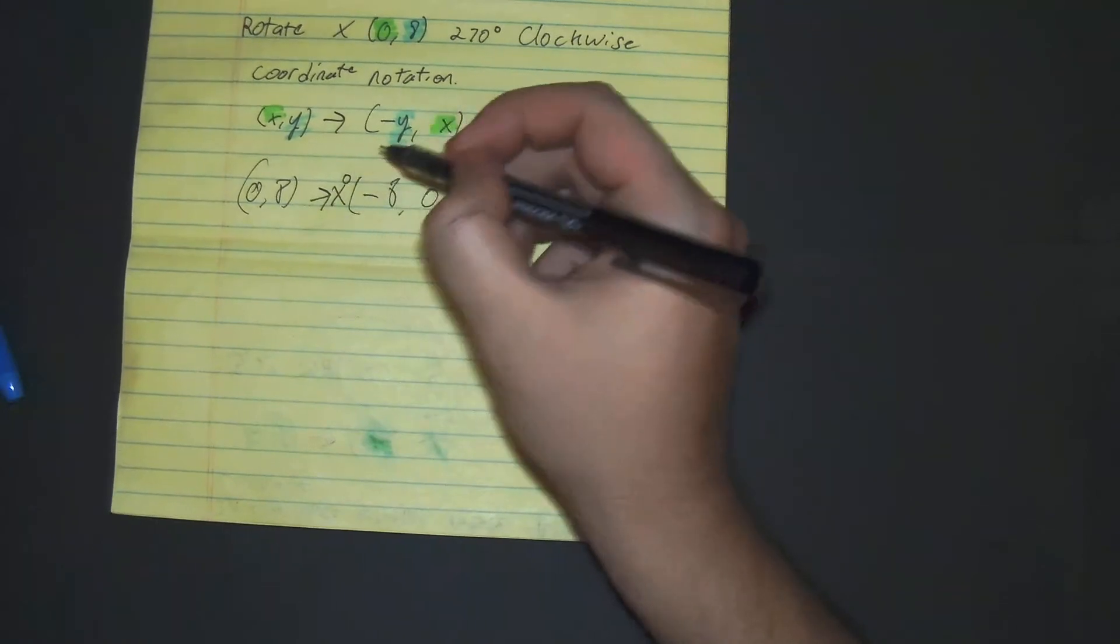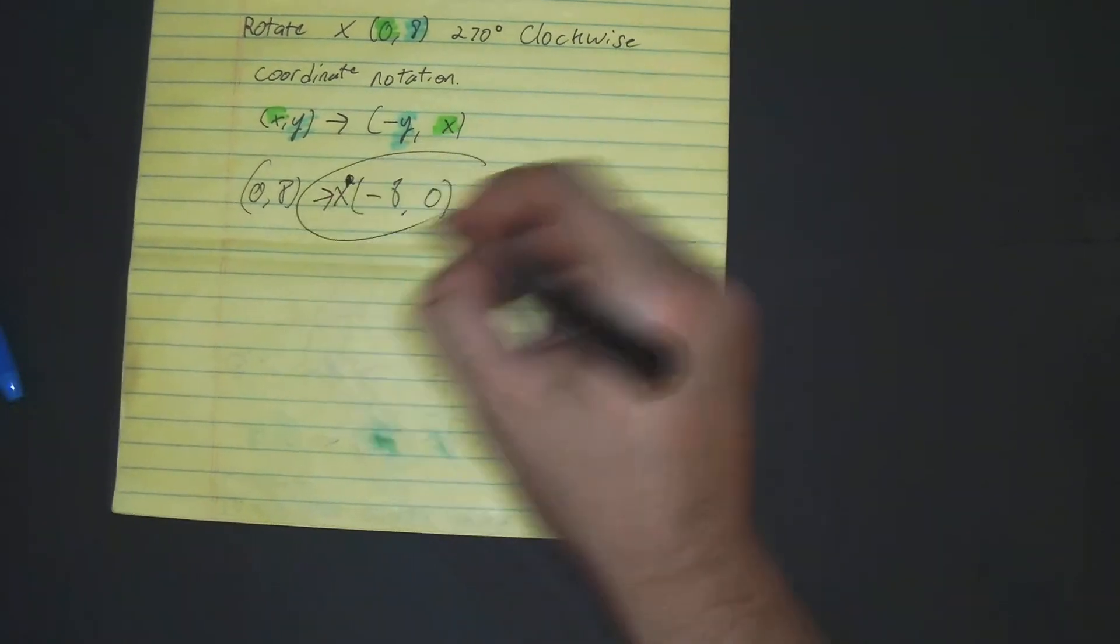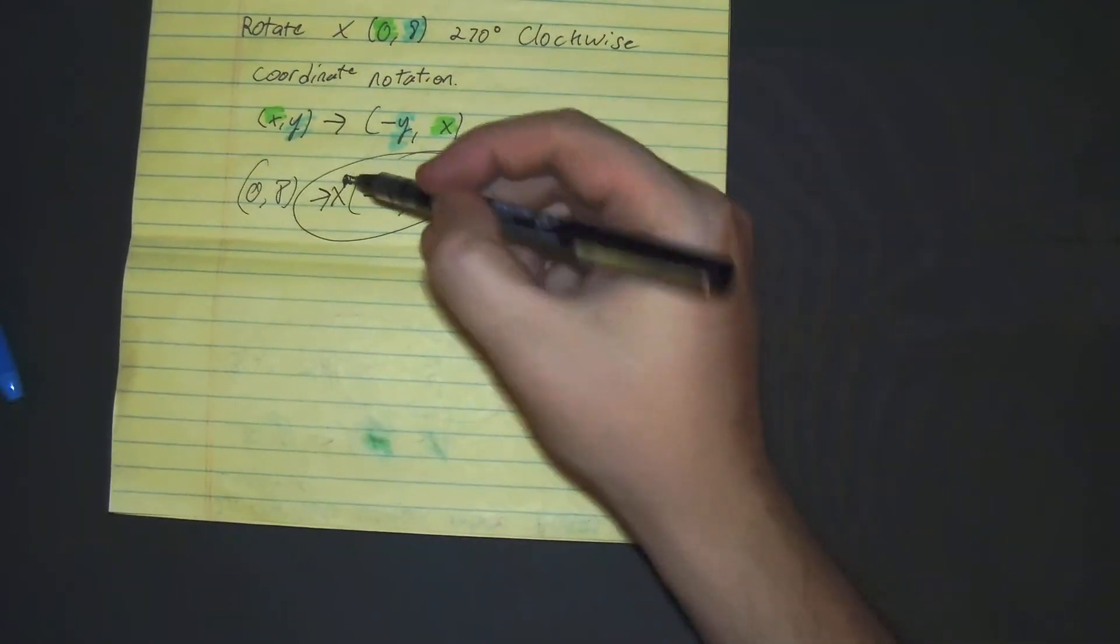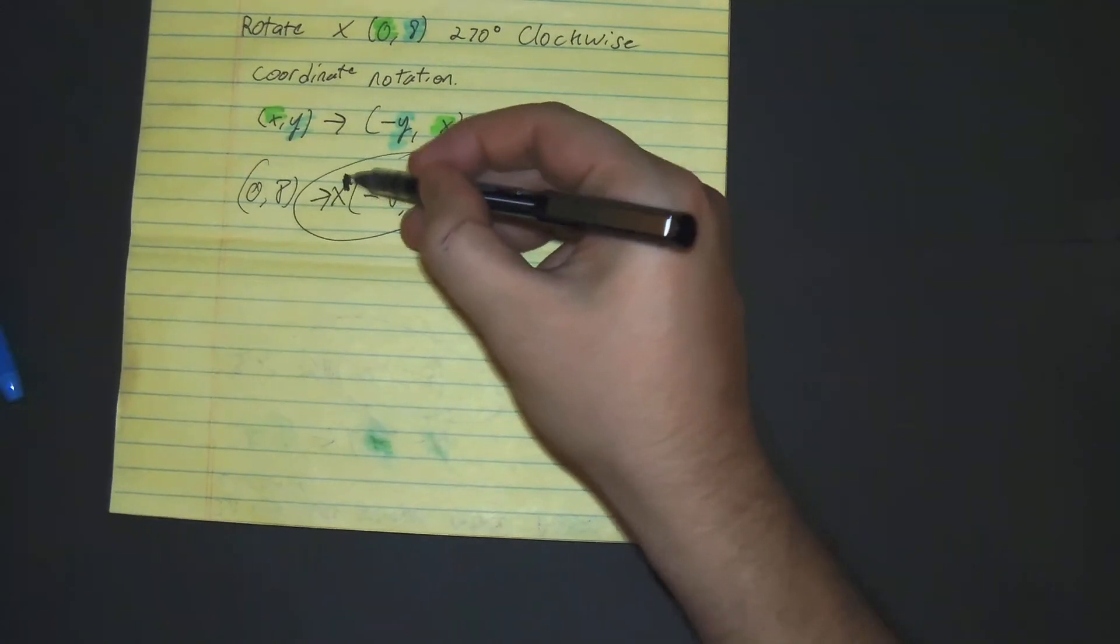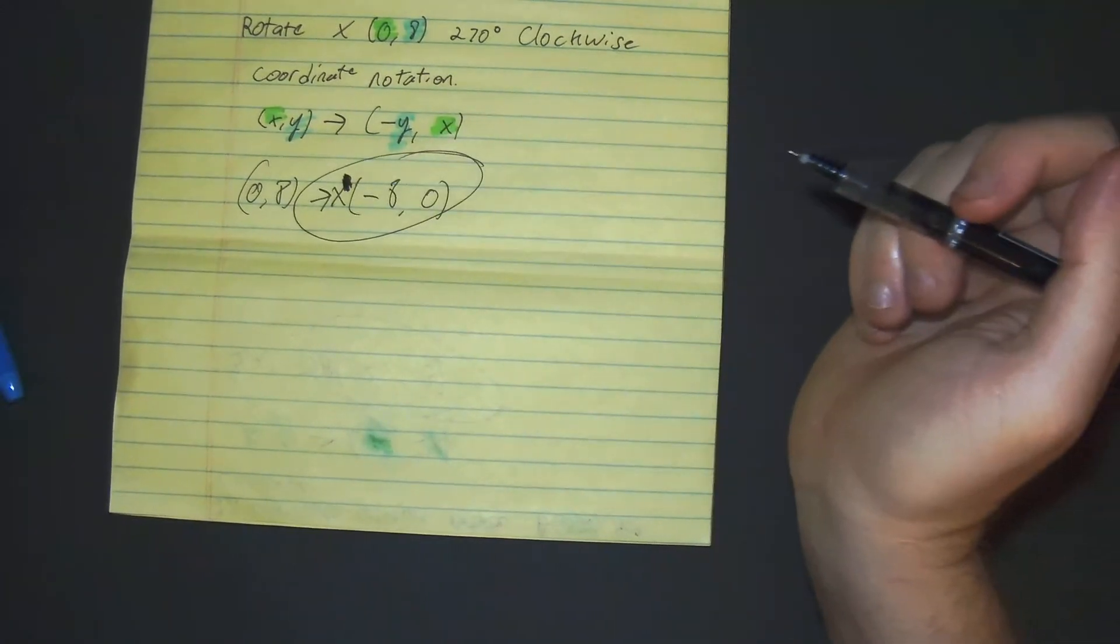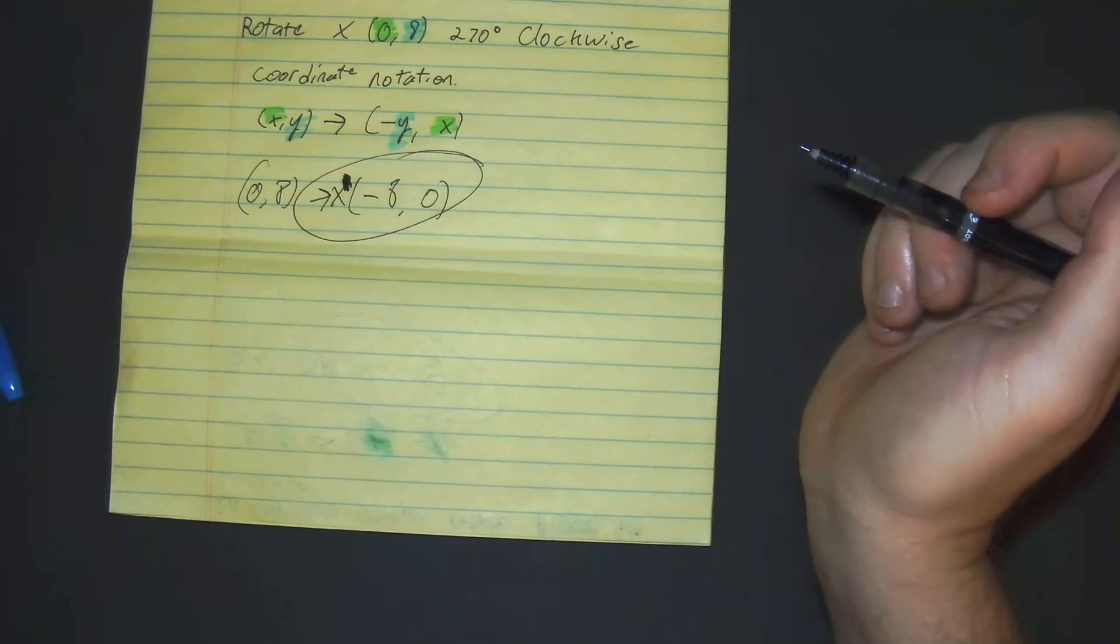So x prime would be, oops, not 0. X prime would be located at, it's an apostrophe, a pretty big one. X prime would be located at negative 8, 0.